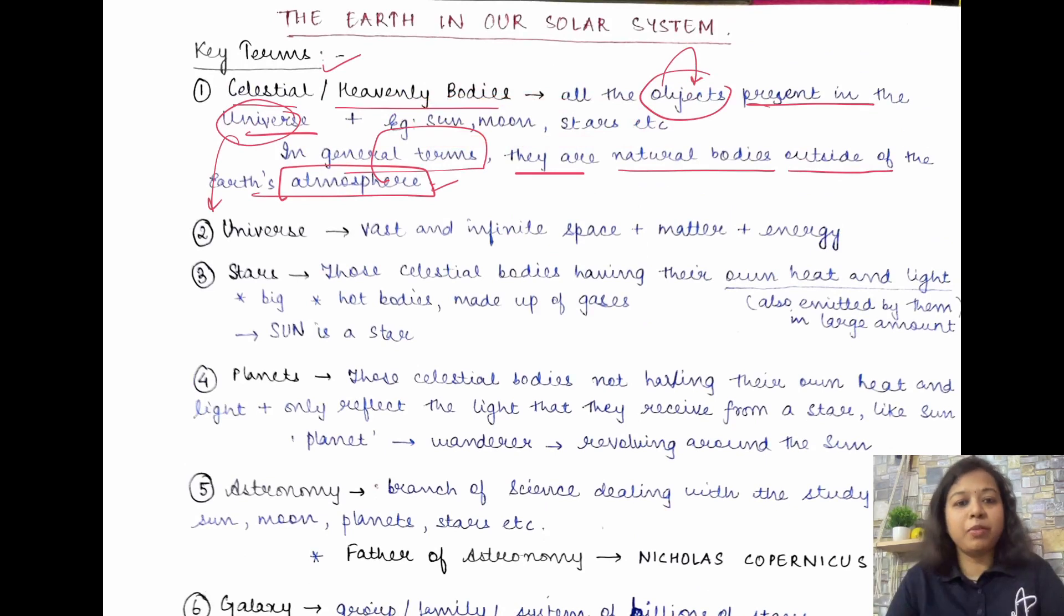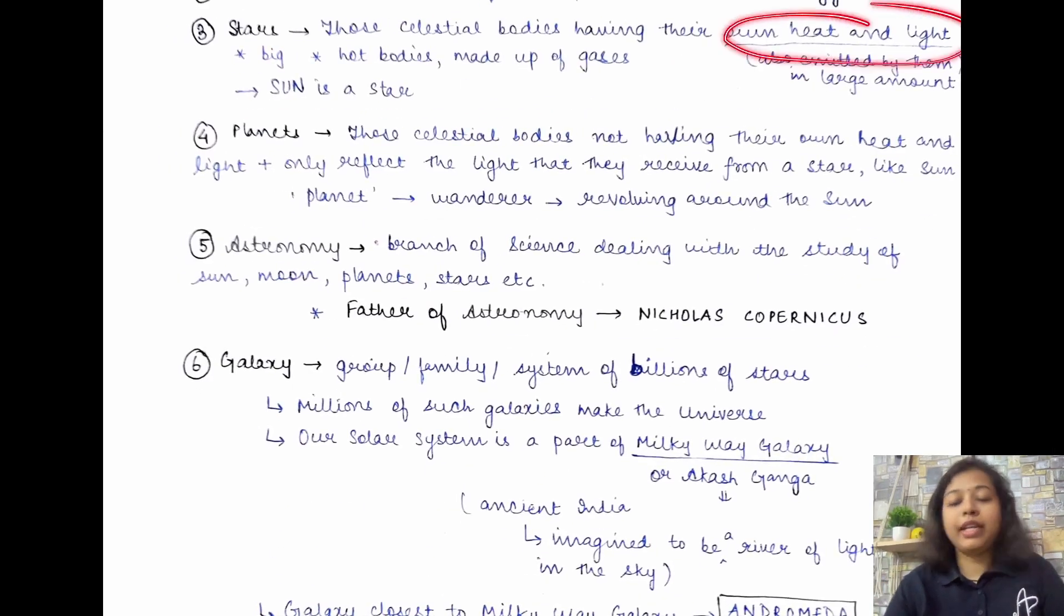So, do not get confused with this example. Here I have just written because it helps in that familiarization. So, these stars would mean all the other stars except the sun. So, sun is also a star. Example of a star. So, own heat and light is the major characteristic for a star.